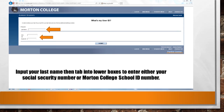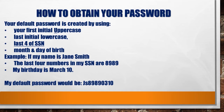You will then be taken to another page and issued your user ID. To obtain your password, you have to understand how our computer system works. After you have applied online, the computer generates a default password. It utilizes your first name, your last name, the last four digits of your social security number, and the month and day of your birth. So for example, if my name is Jane Smith and the last four digits of my social security number are 8989 and my birthday is March 10th, my default password would be capital J, little s, 8989, 0310. If you've never issued Morton College your social security number, please input four zeros: 0000.